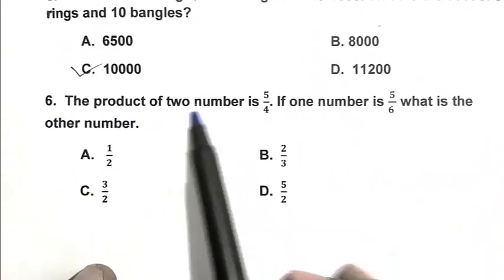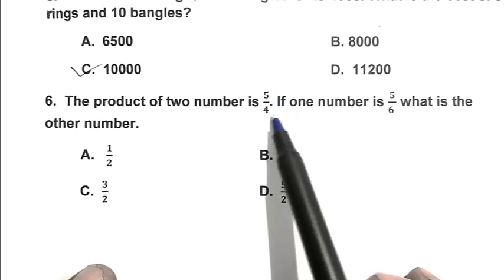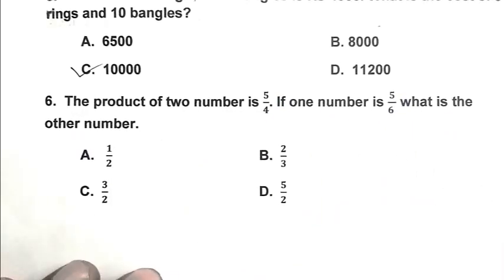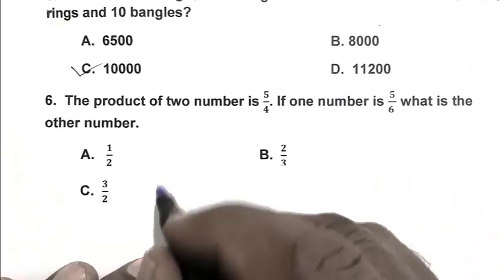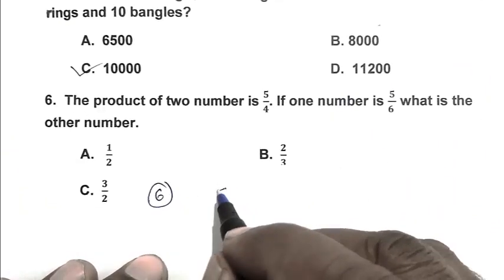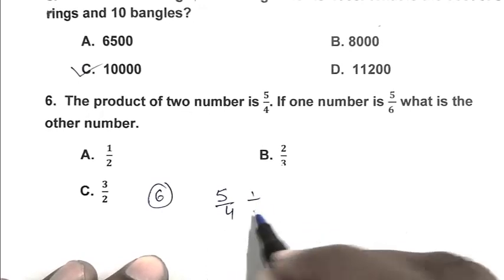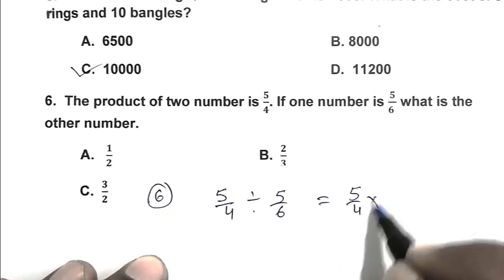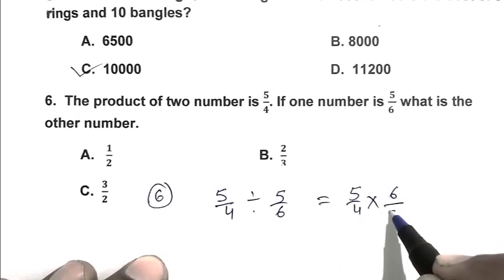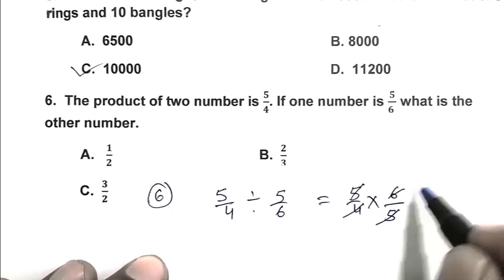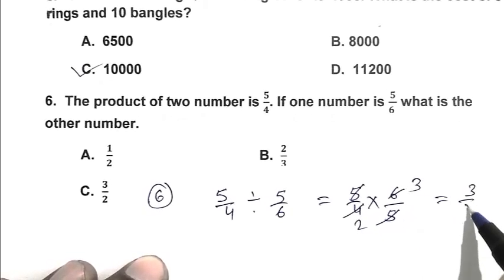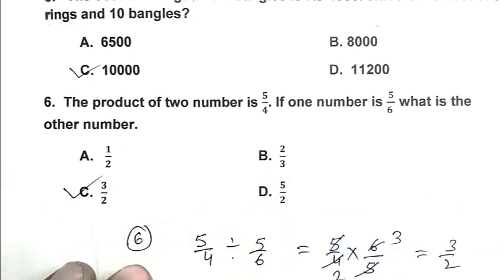Question number 6. The product of two numbers is 5 upon 4. If one number is 5 upon 6, what is the other number? So the other number is 5 upon 4 divided by 5 upon 6. That is 5 upon 4 multiplied by 6 upon 5. Eliminating, we get 3 upon 2. So C is the right answer.